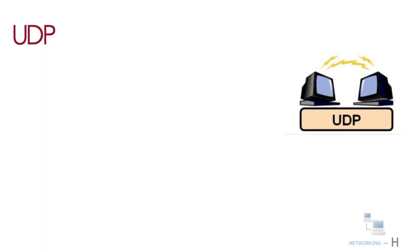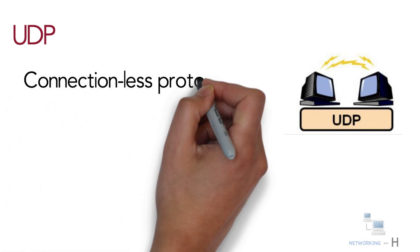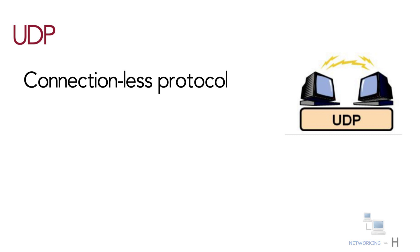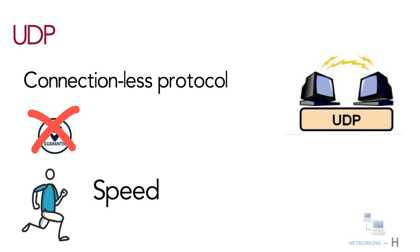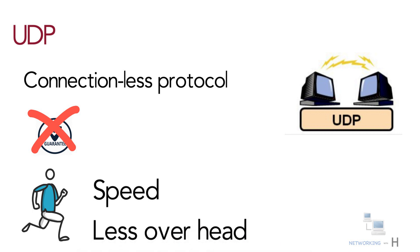Next, let's look at UDP. UDP is very similar to TCP and is also used for sending and receiving data. UDP is a connectionless protocol, which means it does not establish a session and does not guarantee data delivery. When a computer sends data, it does not care if the data is received at the other end — that's why UDP is known as the send-and-forget protocol. UDP can be used in applications where speed rather than reliability is critical. UDP is faster than TCP because of the lower overhead involved in not guaranteeing data delivery.